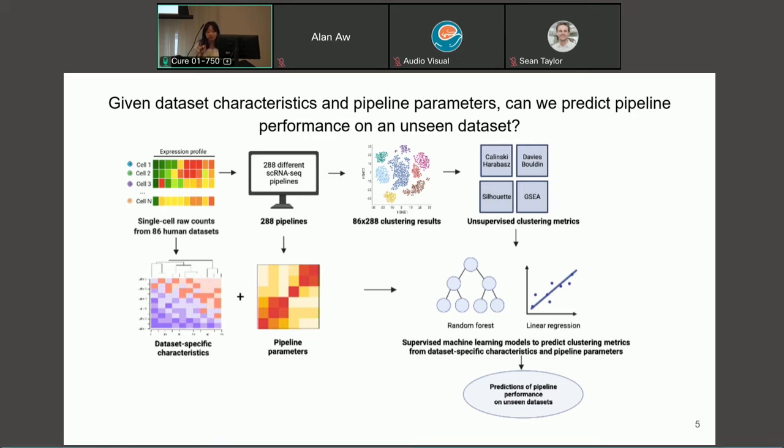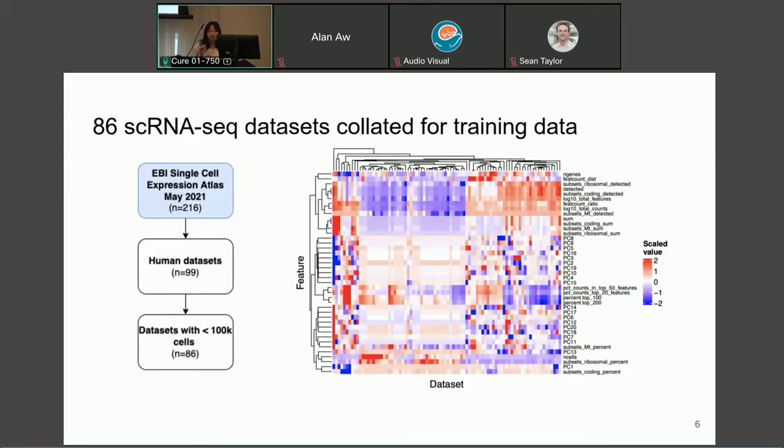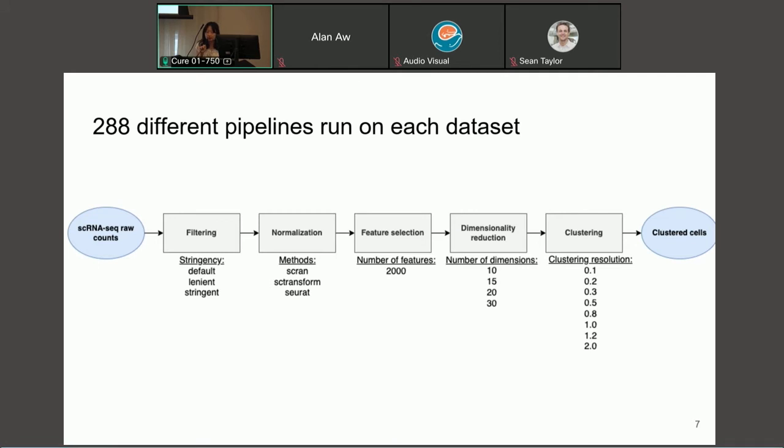And so I'm just going to jump in and talk a little bit more in depth about this workflow. So like I just mentioned, we took 86 single cell RNA sequencing datasets from the EBI single cell atlas and we selected all of the human datasets with less than 100k cells just because of computational constraints. And you can see in this heat map here that these datasets vary greatly in different summary stats such as the percentage of mitochondrial counts. Then we ran the 288 different pipelines on each of these datasets. And so you can see that for each of the five major steps we mentioned before, these are the different methods and parameter settings that we tried for each of the steps. And how we got to 288 is simply by trying every single possible combination of these settings.